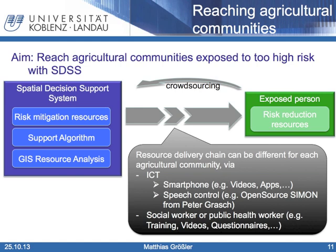No matter which channel is used by the agricultural community, it can always send information back to the spatial decision support system as crowdsourcing information. If they use an ICT channel, they send their information directly back via their device. If they use an ICT channel via a social worker or public health worker, information can be collected and implemented into the spatial decision support system via questionnaires.